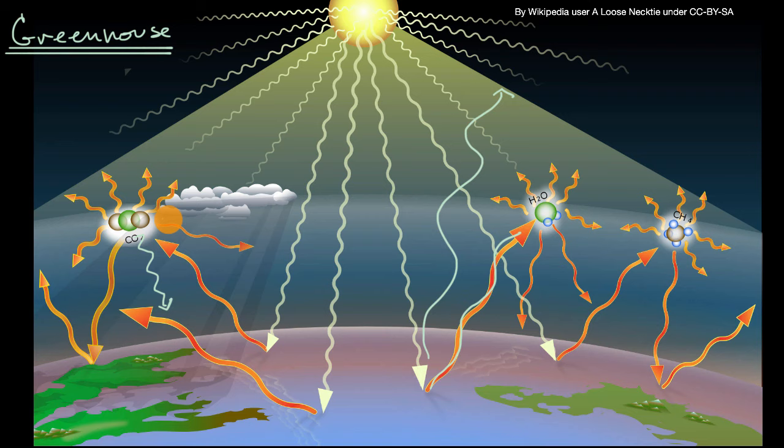Now, the greenhouse effect and greenhouse gases, the ones that I just listed, they're oftentimes associated with manmade climate change and global warming, and they are for good reason. But it's important to realize that we actually need some base level greenhouse effect just for earth to be habitable in the way that it is.